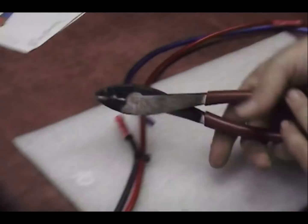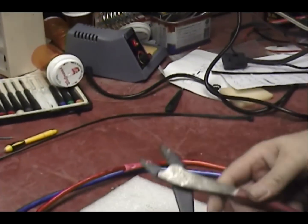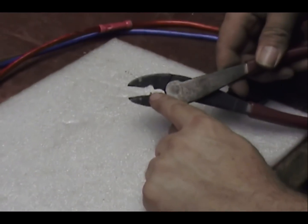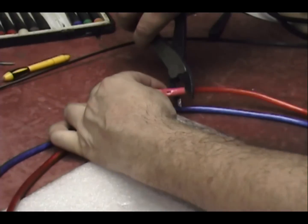Okay. The best crimpers for these are a pair of Klein's. That little nipple right there works great to crimp these out.